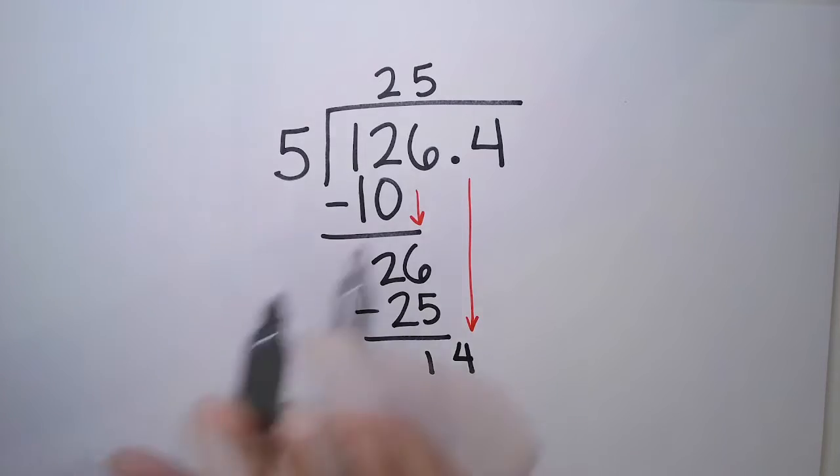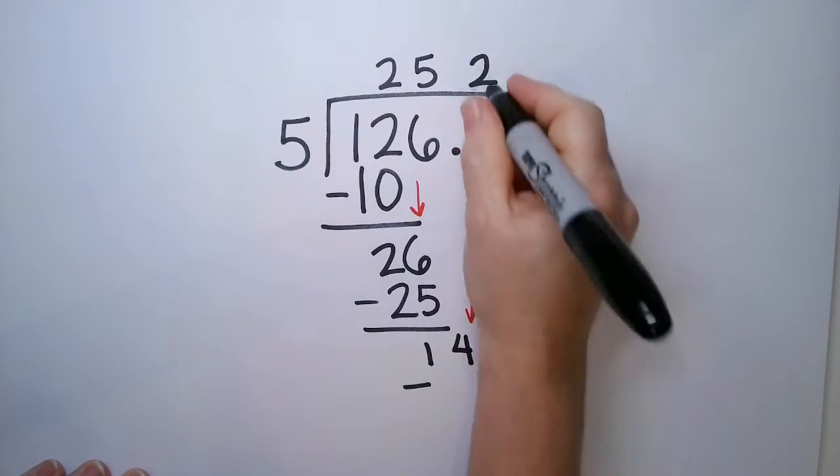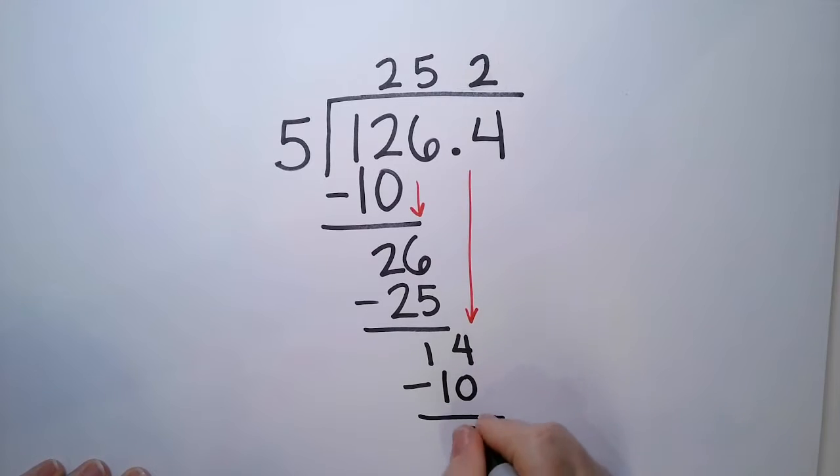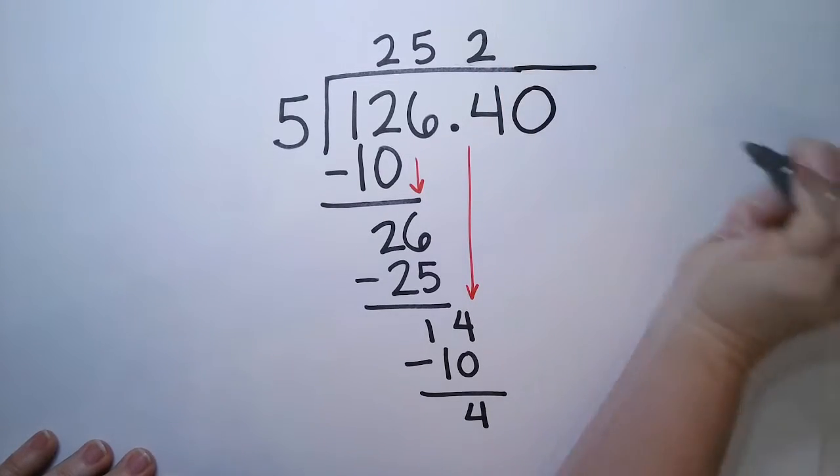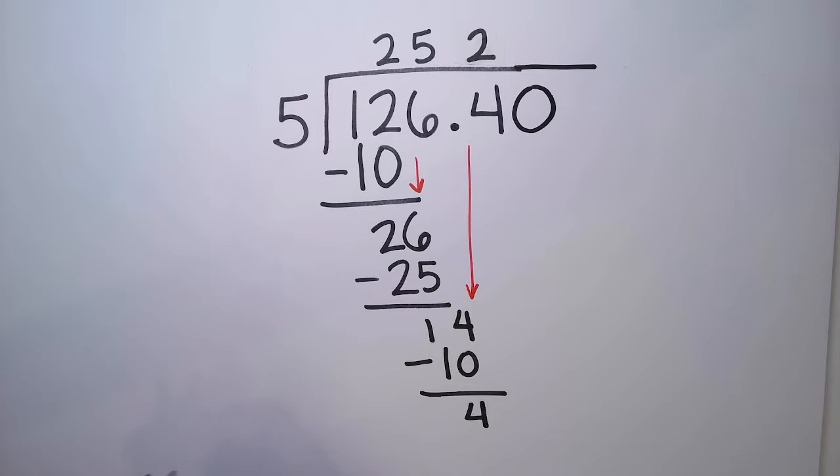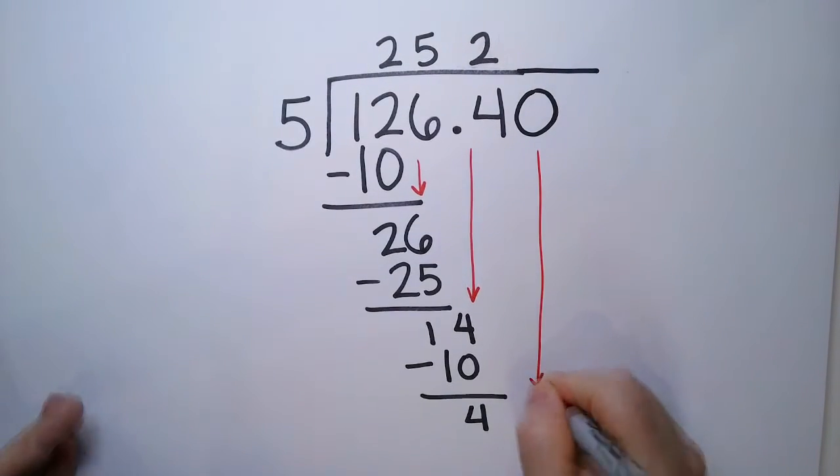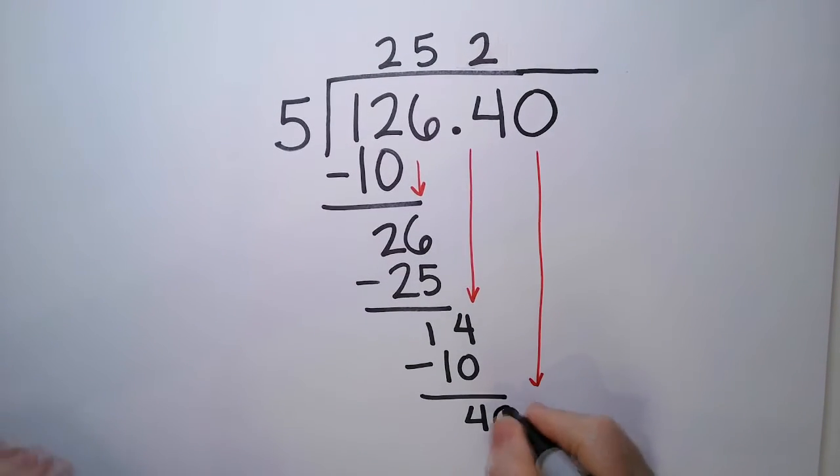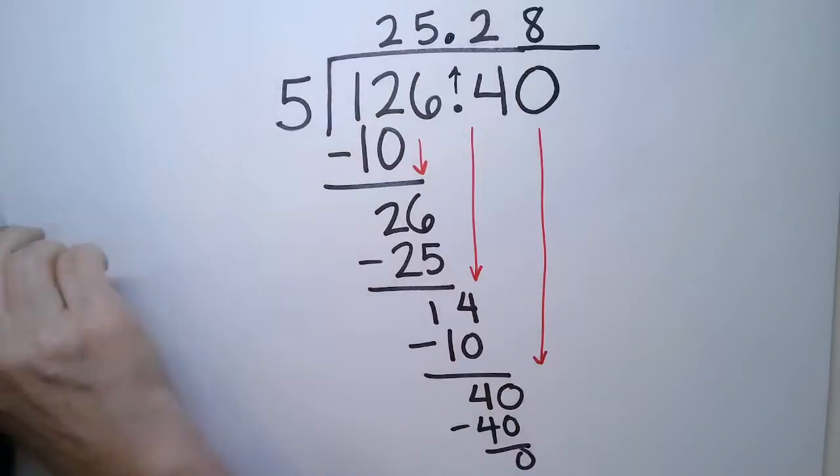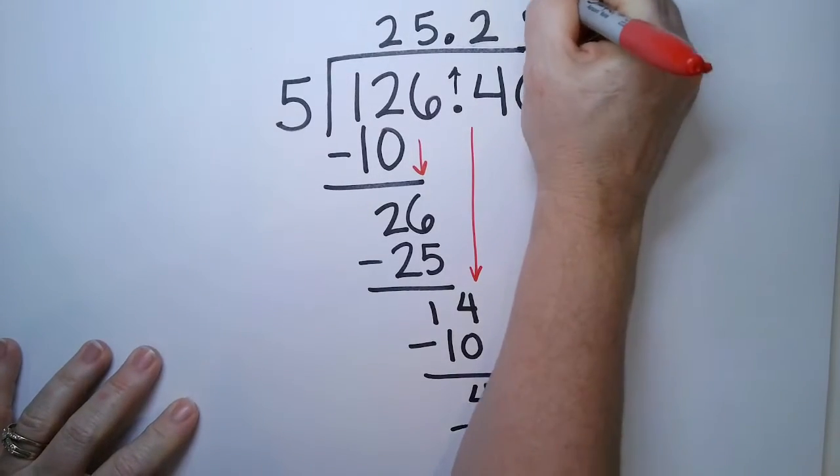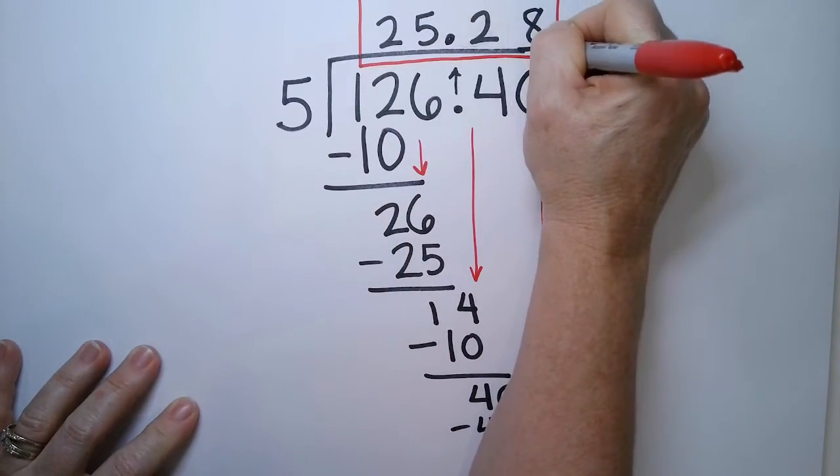5 goes into 14 two times. 2 times 5 is 10, and we have a 4 left over. So what we're going to do now is we're just going to add a zero. This will not change the problem. We have zeros here if we need them. And then I'm going to drop that zero down to make 40. 5 goes into 40 eight times. 8 times 5 is 40, and now we have no remainder. So don't forget to push up that decimal point here. My final answer is 25 and 28 hundredths.